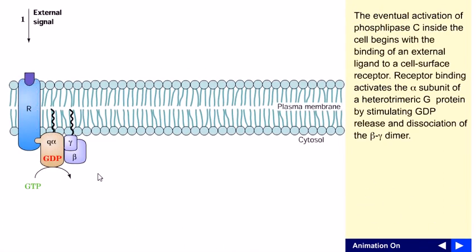The eventual activation of phospholipase C inside the cell begins with the binding of an external ligand to the cell surface receptor. When the external ligand binds with the cell surface receptor, it activates the alpha subunit of a heteromeric G protein.